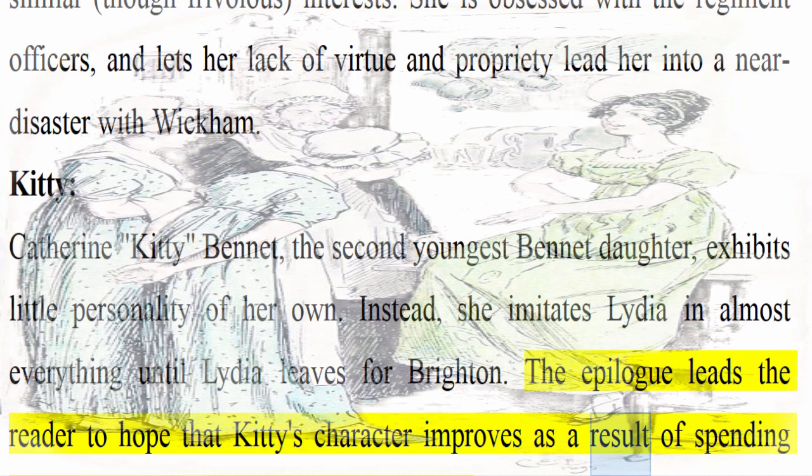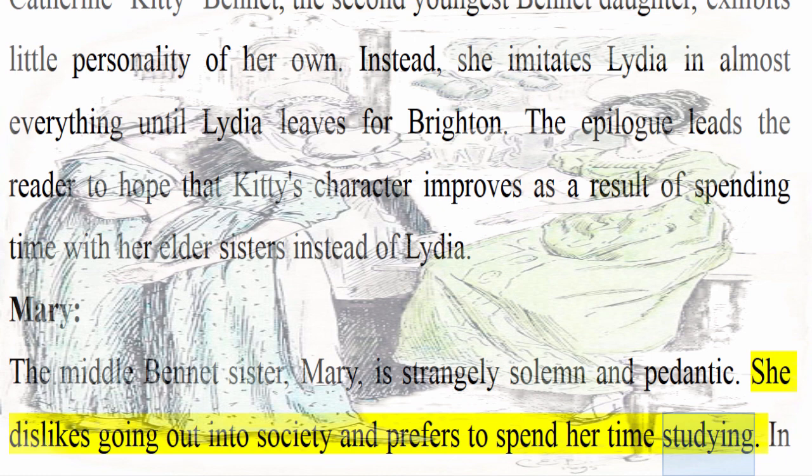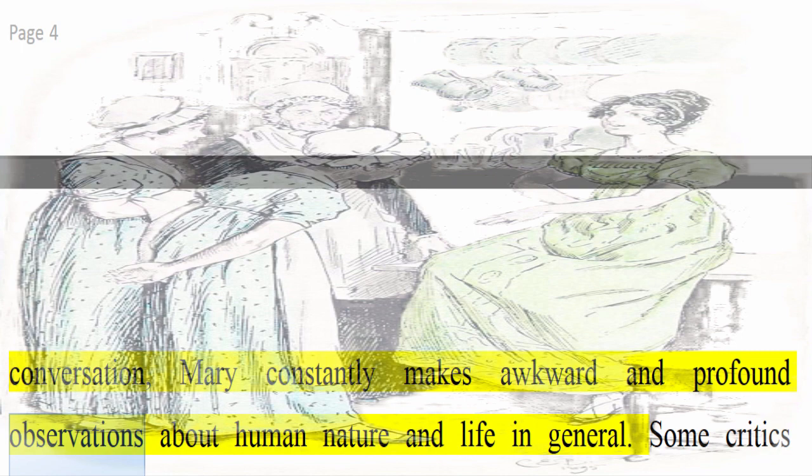Mary: The middle Bennet sister, Mary, is strangely solemn and pedantic. She dislikes going out into society and prefers to spend her time studying. In conversation, Mary constantly makes awkward and profound observations about human nature and life in general. Some critics believe Mary was a cipher for Austen herself.